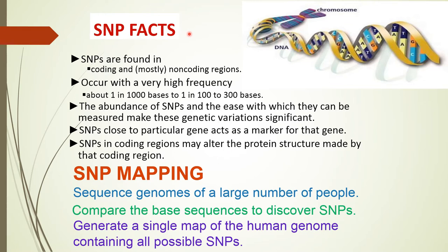Some key facts about Single Nucleotide Polymorphisms: SNPs are found in both coding as well as non-coding regions and occur with a very high frequency — about one in every thousand base pairs to one in every hundred to three hundred base pairs. The abundance of SNPs and the ease with which they can be measured make this genetic variation significant.